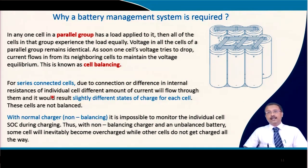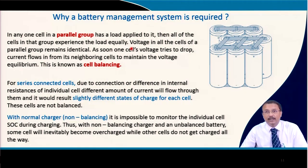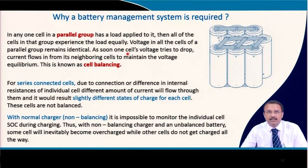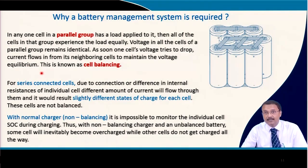Why exactly is a battery management system required? When cells are in a parallel group with a load applied, all cells in the group experience the load equally. If one cell's voltage drops, current flows from neighboring cells to maintain voltage equilibrium. This phenomenon is called cell balancing, and parallel cells are generally not a problem.